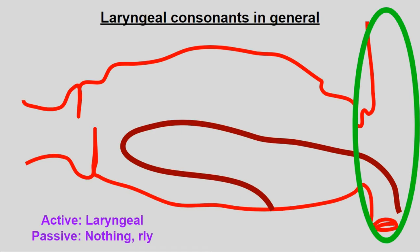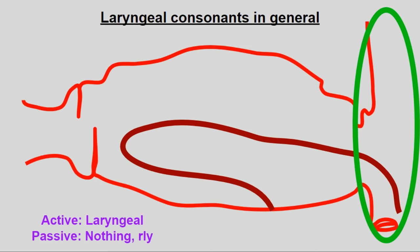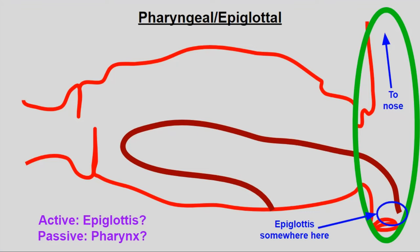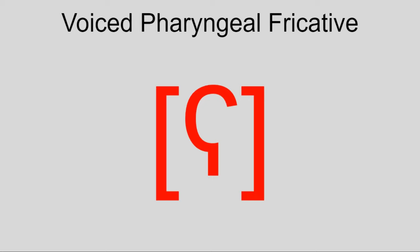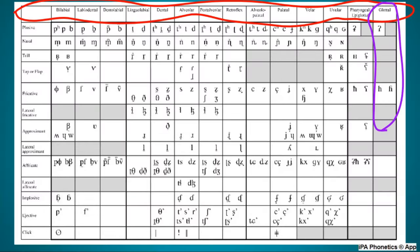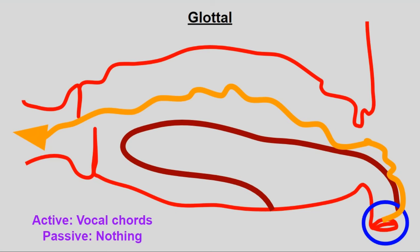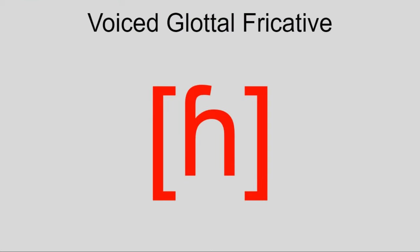The last two places of articulation are fully in the throat. The first is pharyngeal, sometimes called epiglottal. The pharynx is a tube leading from the nose past the mouth down to the esophagus and trachea, while the epiglottis is the flap responsible for closing off your windpipe. The main two sounds here are the two most quickly thought of Arabic consonants: ħ and ʕ. And finally, glottal — which is just the vocal cords or glottis — includes H, ɦ, and the glottal stop.